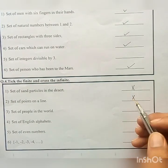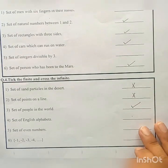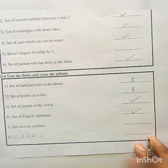Set of people in the world. People in the world can be countable. So it is a finite set. Set of English alphabets, 26. It is again countable. Finite.